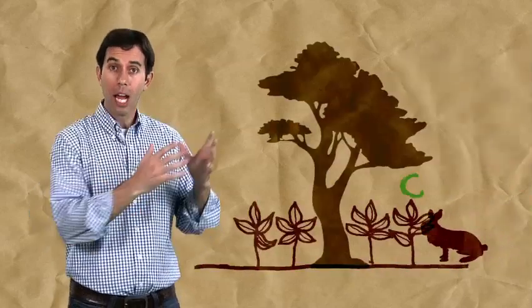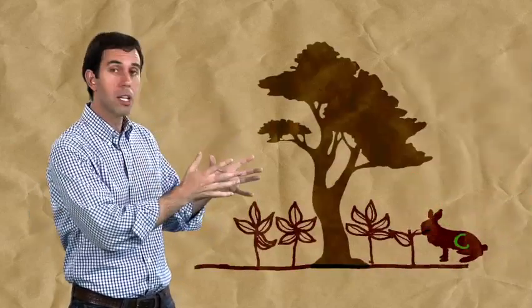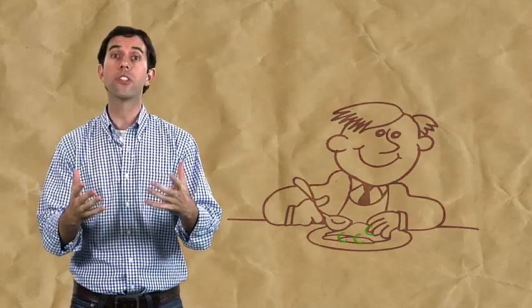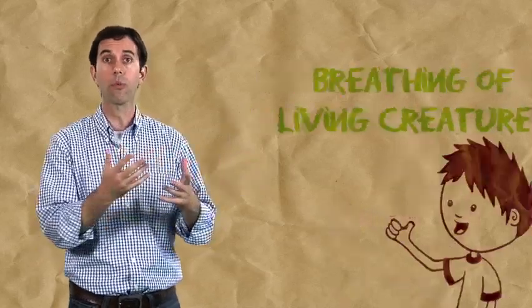Afterwards, the carbon passes from the plants to all animals, including humans, and then it returns to the atmosphere, either through the breathing of living creatures or through aerobic decomposition. That is the carbon cycle, and it ensures that there is an adequate presence of CO2 in the atmosphere for us.